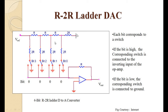An inverting operational amplifier is used so that we can have some gain in the circuit. We can get the output Vout directly, which will be an analog signal, but to have gain we connect an inverting op-amp. The output of the R-to-2R ladder circuit is connected to the inverting input of the op-amp, the non-inverting end is grounded, a feedback resistor Rf is given, and the output is taken at the op-amp output.